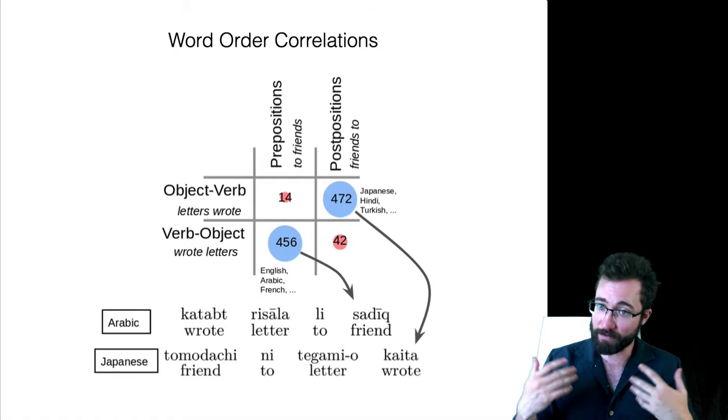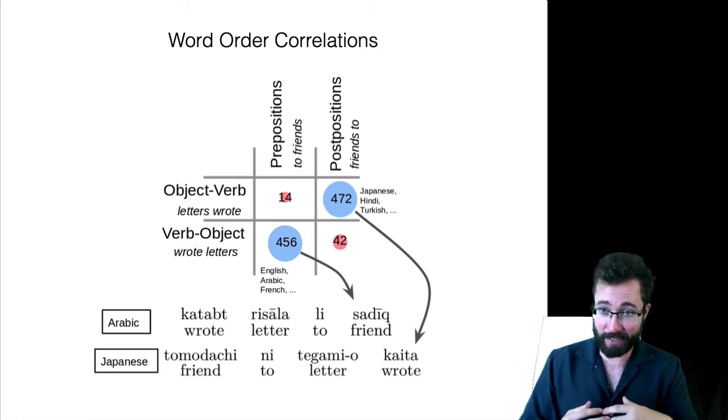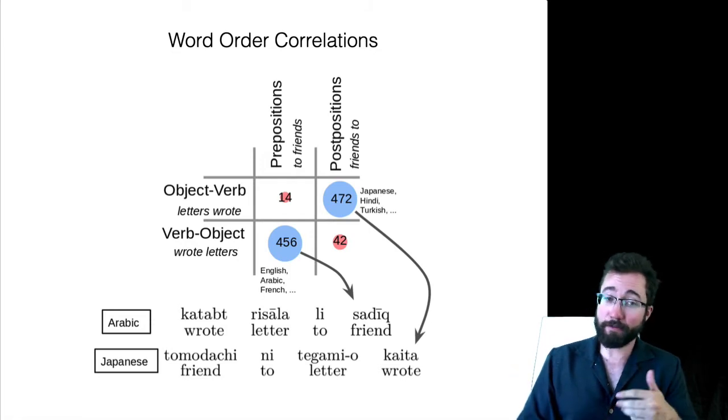What we have here is numbers of languages in a good typological sample where they have, for example, object-verb order, the verb following the object, and postpositions where you say like friends to. This would be languages like Japanese. There's lots of languages like that.